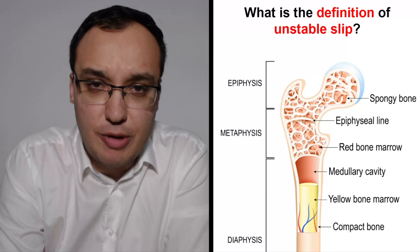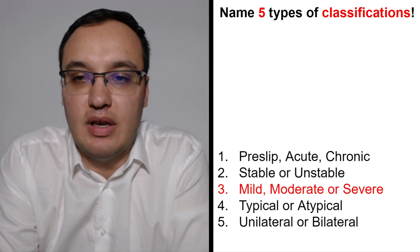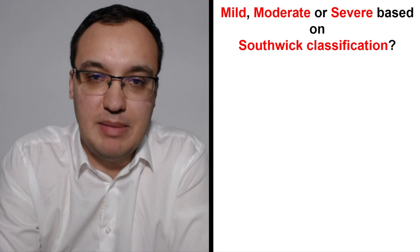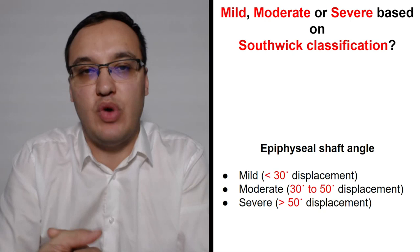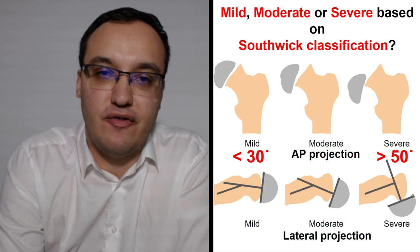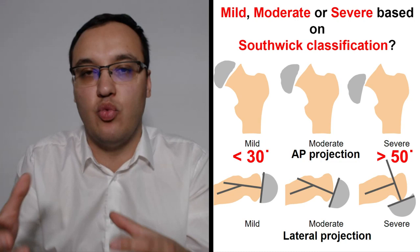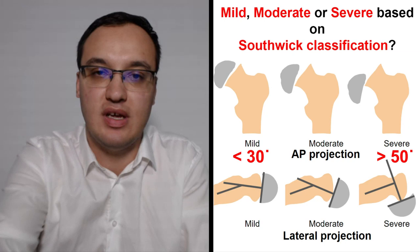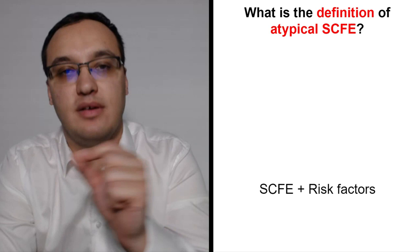Stable versus unstable: stable means the epiphysis is not displaced from the metaphysis and walking with crutches is possible. Unstable means the epiphysis is displaced from the metaphysis and the patient requires a wheelchair. For severity — the Southwick classification — mild is less than 30 degrees, moderate is 30 to 50 degrees, and severe is more than 50 degrees slip angle, assessed on both lateral and AP X-ray projections.